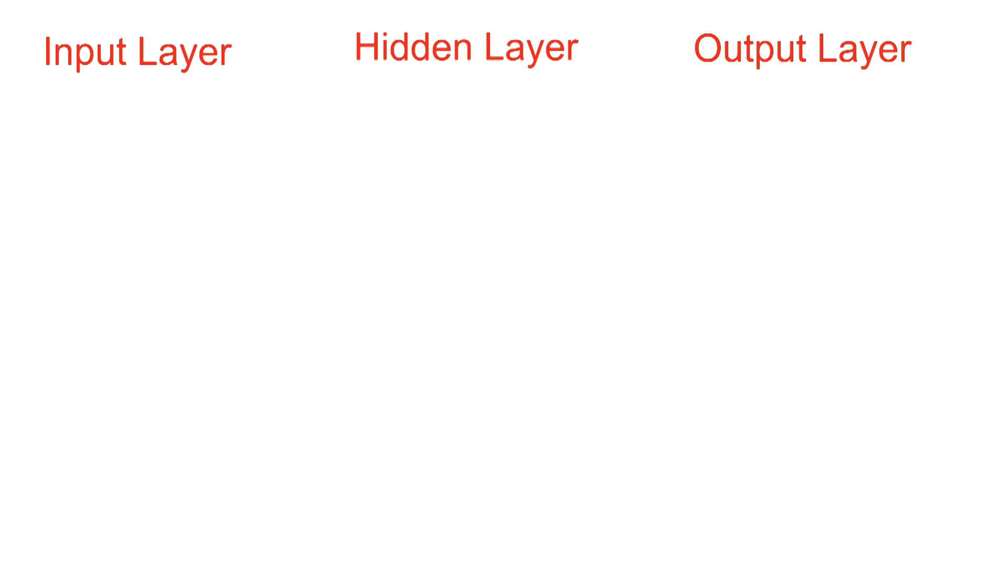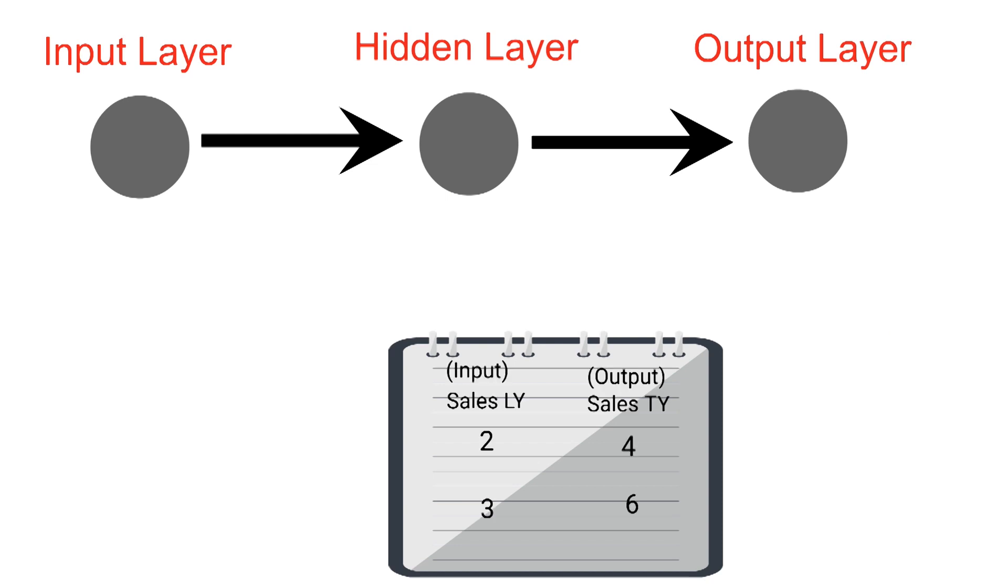Let's go ahead and draw our layers and our data set up on the screen here. The next thing we're going to do is we're going to add our weight to our hidden layer. You might be wondering, how does the neural network know what weight to choose? How does it know which weight to start with? Well, the answer to that question is it doesn't. It's random. Neural networks start out with random weights. They just take a random guess. So let's go ahead and add a weight here of 1.5 to our hidden layer.